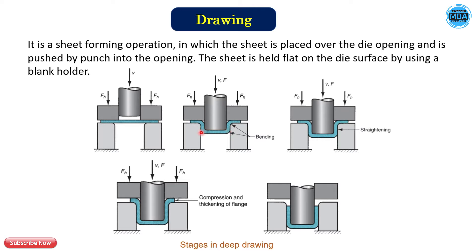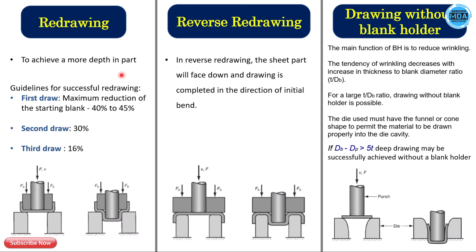As the punch is forced down, it forms the shape of the die. At one stage you can see the thickening of the flange — because of the continuous compression at the top edge of the sheet, the thickness is greater there. By continuously pushing the material, we get the required shape. This is the drawing operation — it is essentially a forming operation where we push the blank into the die to form the shape.